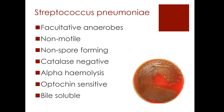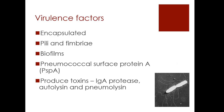Now let's talk about its virulence factors — what makes it so infectious and what leads to it causing infection. First of all, it's an encapsulated bacterium, which gives it a good protective mechanism against the body's immune response. It also has pili and fimbriae — these hair-like structures seen in the picture on the right — that allow it to attach and colonize an area, and if it begins to grow and multiply, it can start to cause an infection. It also has a pneumococcal surface protein A (PspA), which we'll discuss in more detail shortly. And like Staphylococcus, it has the ability to produce toxins — three toxins we need to know: IgA protease, autolysin, and pneumolysin.